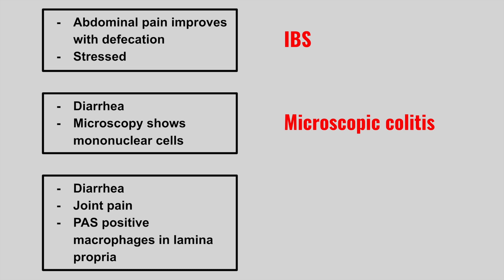The next patient has diarrhea, joint pain, PAS positivity, and macrophages in the lamina propria — this is Whipple disease, caused by the gram-positive Tropheryma whipplei bacteria. It's usually an older male with multiple problems including joint pain, heart issues, and a rash. Look out for Whipple disease.